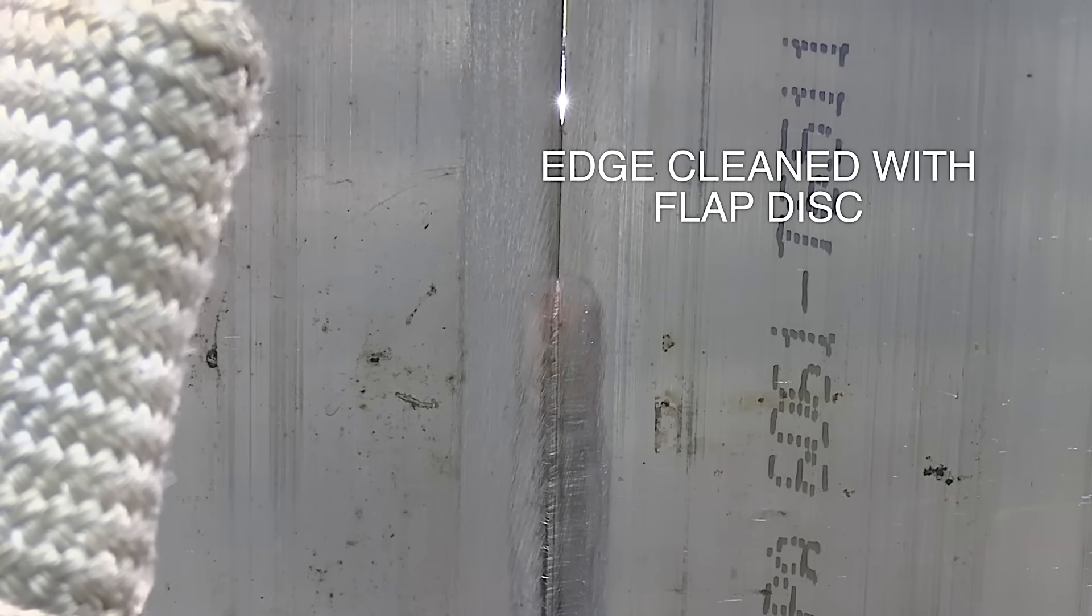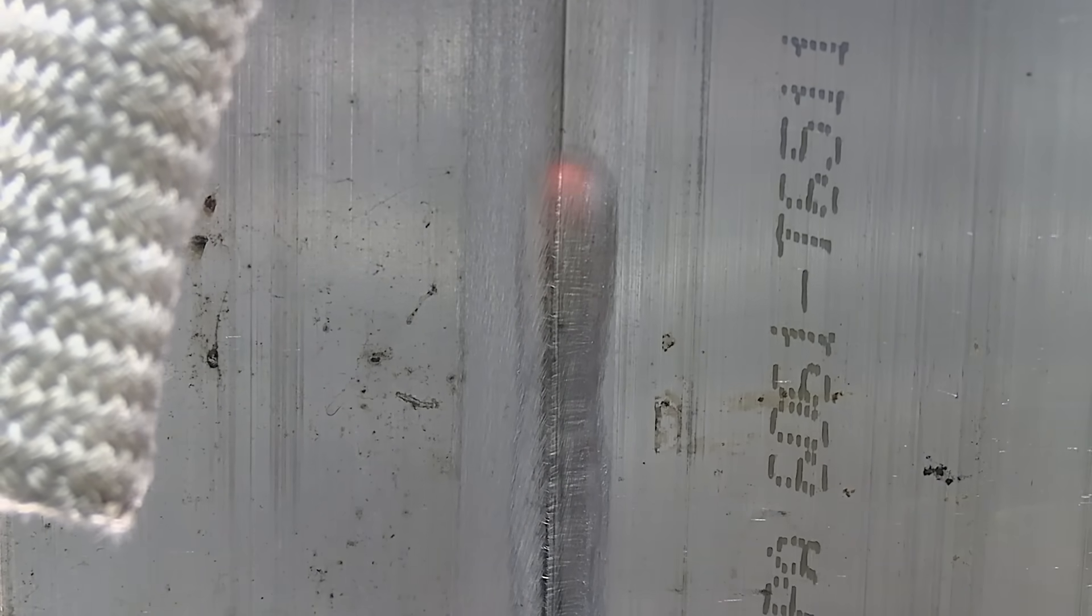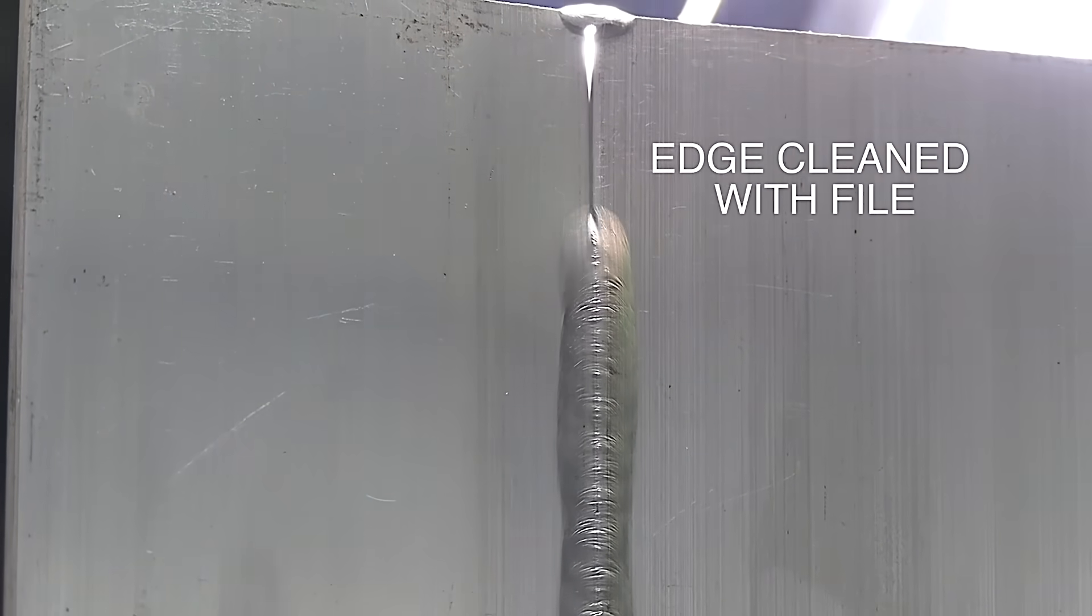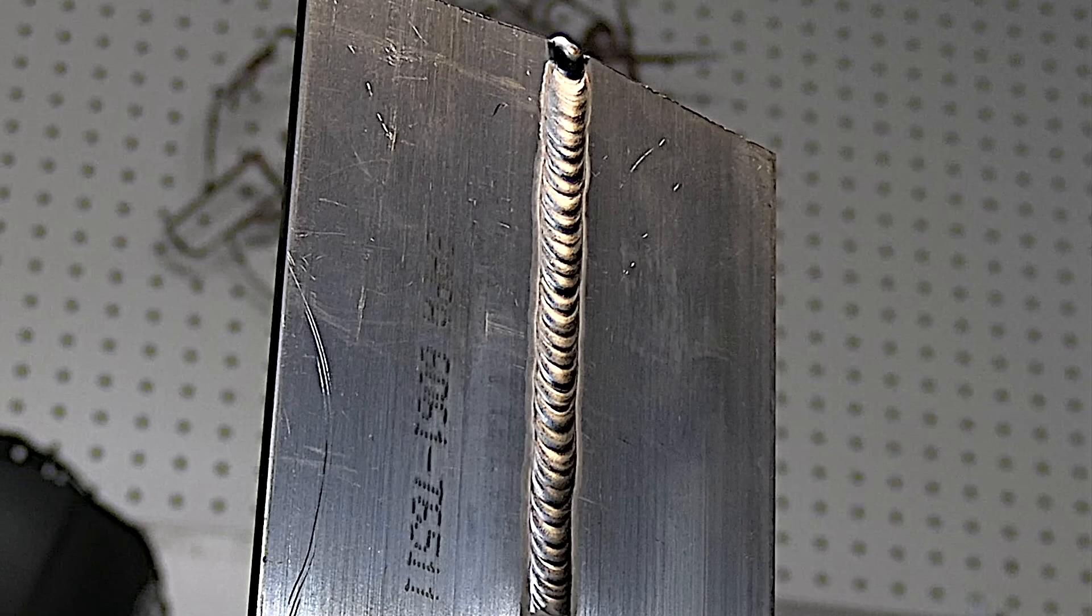It's best to smooth them down using a nice clean file. In fact, I have seen it where when I use the flap disc, especially one that's not designed for aluminum, it smears the oxides and prevents penetration. Whereas a file, if it's a good clean file, can work a lot better. All right, let's get back to welding.